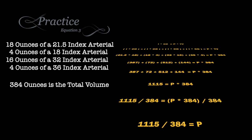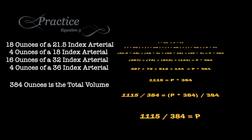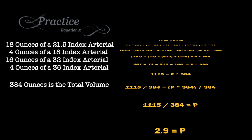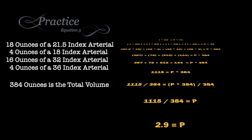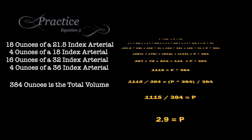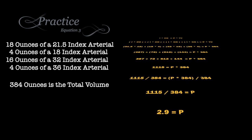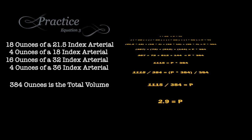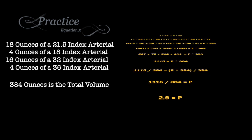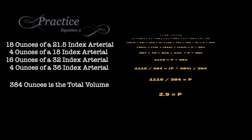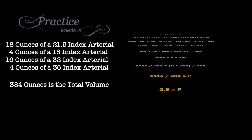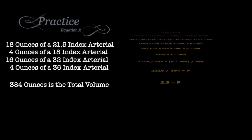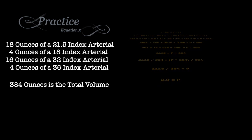Now this equals the percentage in the tank by the total volume of the tank of 384. When we divide the total volume, 384, by both sides to remove it from the right side, we get 1,115 divided by 384, which is going to give us the total percentage of formalin in the tank. When we do this division, we come up with 2.9% formalin in the tank.